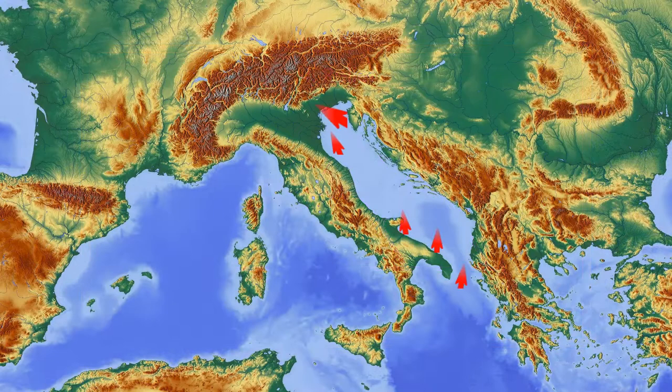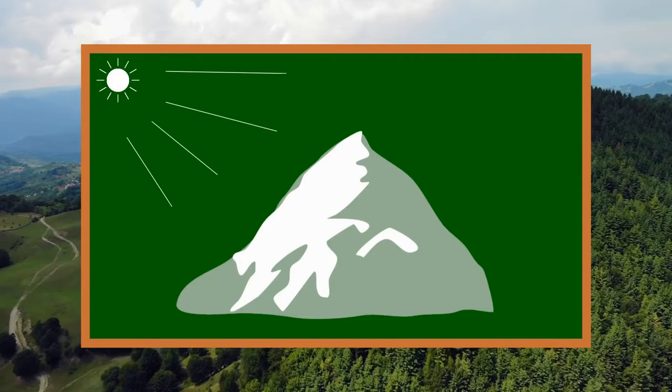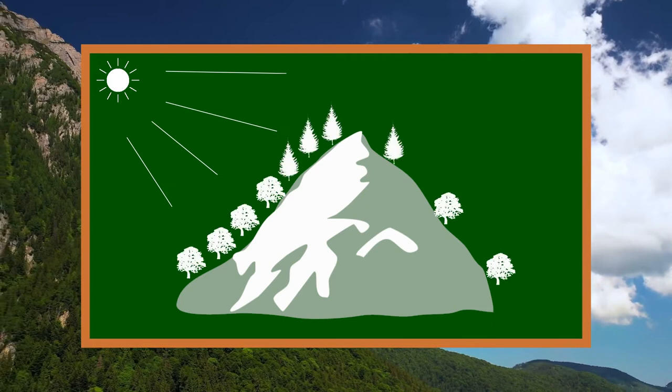For example, some mountain ranges do not allow warm air masses, with their height, to reach the interior of the mainland. As another connection between climate and relief, we can take the sunny and shady sides of the mountain massive, where the sunny side is warmer and, at the same time, richer in moist soil and vegetation, which further have their own effects on the climate of that local area.